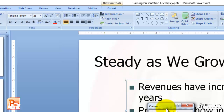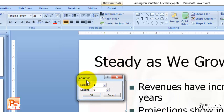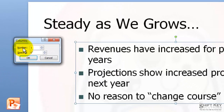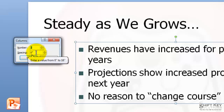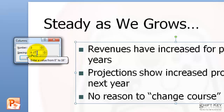That'll open up my Columns dialog box and I want to change this from one to two columns and then I want to identify the spacing. I want to apply the 0.1 spacing, so it's just a little bit of spacing between the columns.